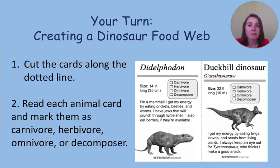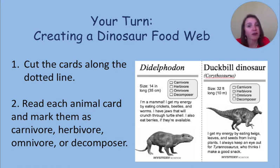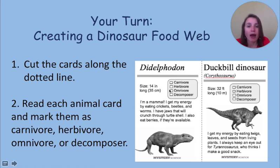I'm going to walk you through the steps on creating your food web. The first step is to cut the cards along the dotted line. Once you've done this, read all of the cards and mark them as a carnivore, herbivore, omnivore, or decomposer. For example, let's read about the didelphodon. The didelphodon is 14 inches long — just a little more than a foot. It says: I'm a mammal. I get my energy by eating crickets, beetles, and worms. I have jaws that will crunch through turtle shell. I also eat berries if they're available. Since this animal eats crickets, which are animals, and berries, which are part of a plant, I know that it is an omnivore. So I would check off omnivore.